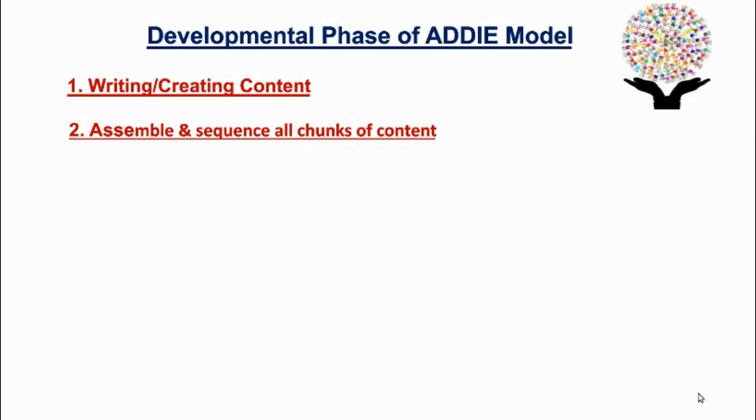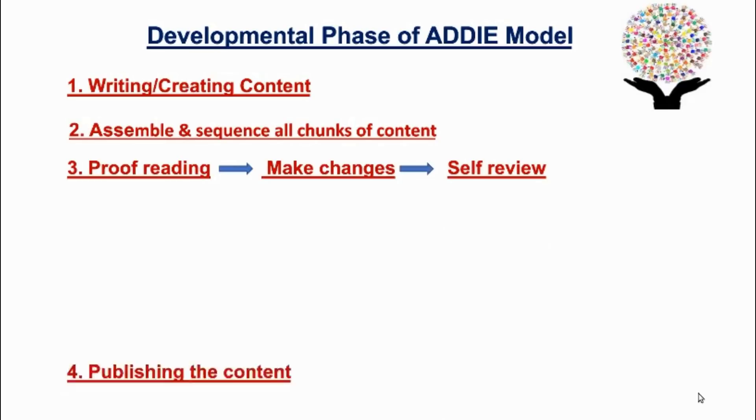After that, the next objective will be proofreading multiple times, make necessary corrections wherever needed, and at least one final self-review before publishing the content. So these are the activities that are generally done during the developmental stage.